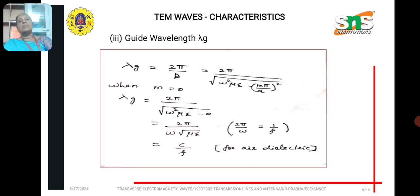And third parameter is guide wavelength lambda g. Lambda g formula is 2 pi by beta, that is the wavelength of the wave through the waveguide. So, 2 pi by beta is omega root mu epsilon.